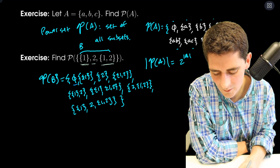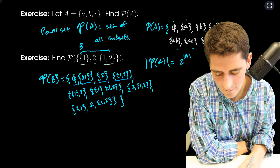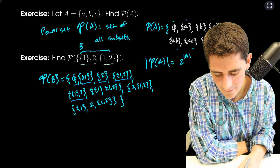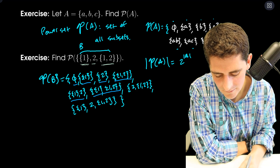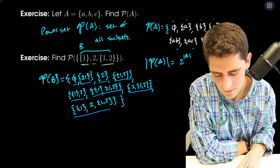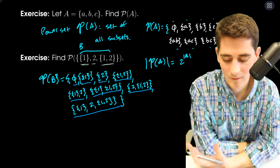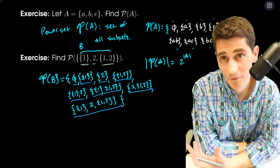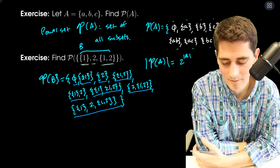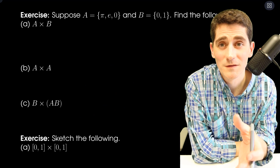We have one, two, three, four, five, six, seven, eight — eight elements. The power set, since the set only had three things in it, has eight elements. That's power sets.